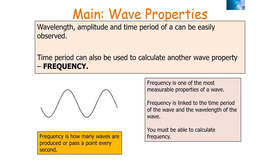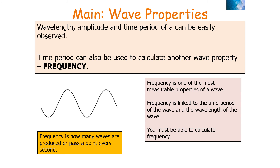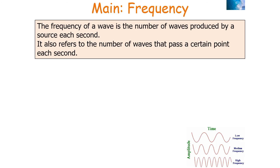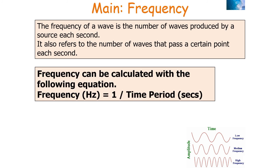Wavelength, amplitude, and time period can all be observed from a waveform diagram. The time period can also be used to calculate frequency. Frequency is one of the most measurable properties of a wave — it is how many waves are produced or pass a point every second. The unit of frequency is hertz: 1 hertz is one wave per second, and 20 hertz is 20 waves passing a point every second. Frequency in hertz equals 1 over the time period in seconds: f = 1/T.